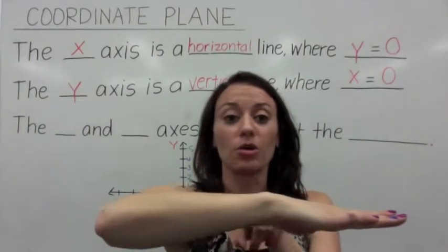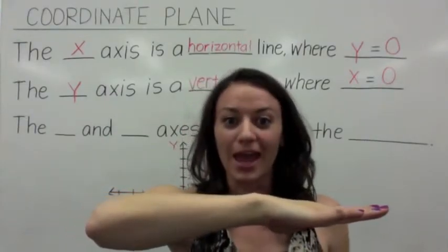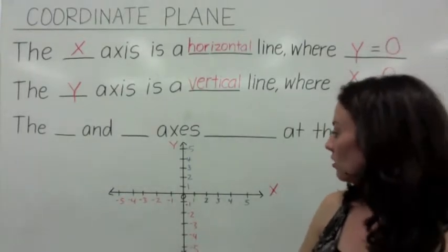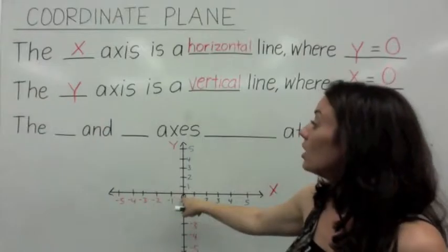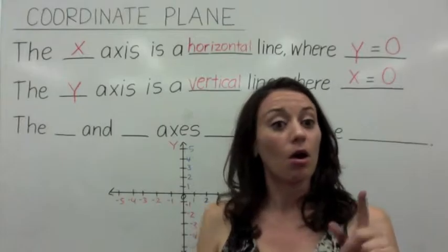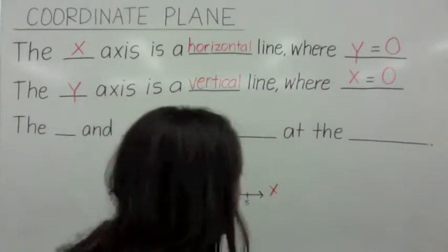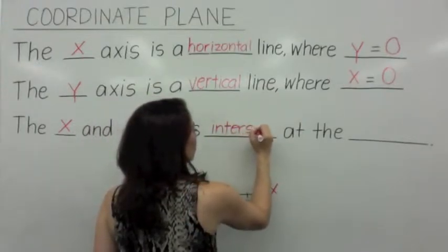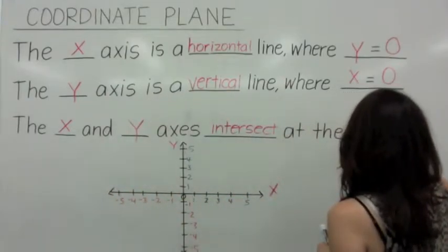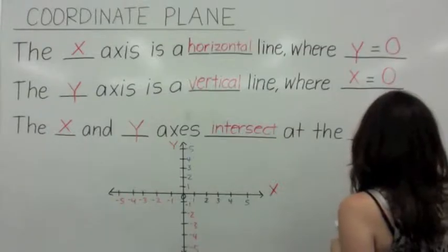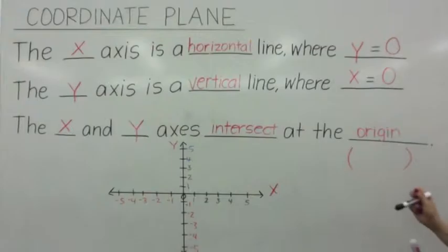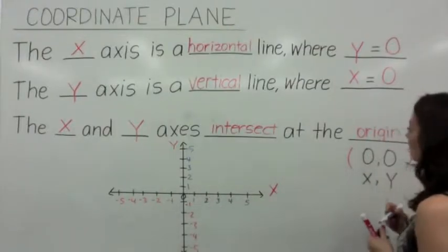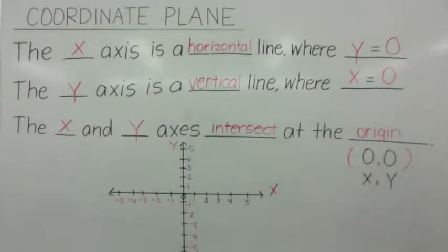So when the x-axis and the y-axis intersect, where do you think they intersect? What is the intersection point? It is at 0, 0, and we call that the origin. So when the x and y-axis intersect, they intersect at what is called the origin. And the origin has a very special ordered pair. Because this is where x is 0 and this is where y is 0, it is at (0, 0).